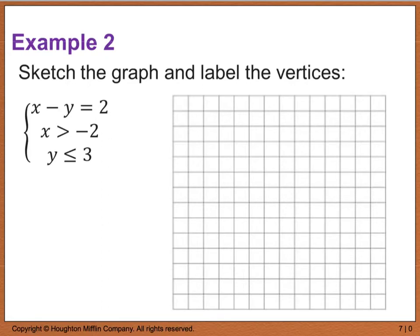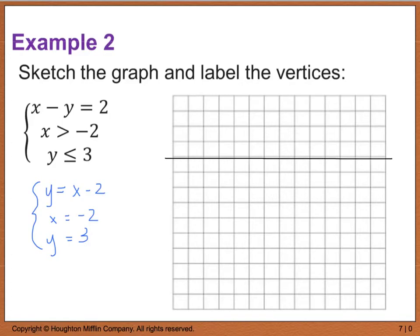Example 2 says to sketch the graph and label the vertices. The first thing I'm going to do is get y by itself in all of the equations. I'll set up my coordinate system and graph y equals 3. Because the inequality is less than or equal to, this will be a solid line at y equals 3.